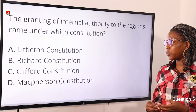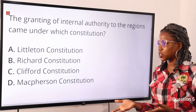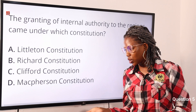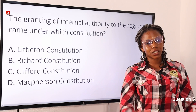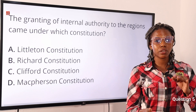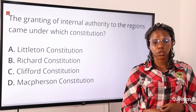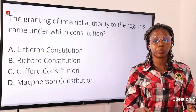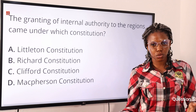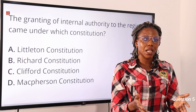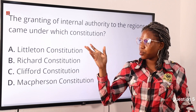Question five: the granting of internal authority to the regions came under which constitution? Option A: Lyttelton constitution, option B: Richards constitution, option C: Clifford constitution, option D: Macpherson constitution. The answer is the Richards Constitution of 1946, which introduced regionalism. Three regions were created — North, East, and West. Nigerians participated in the legislative council, and one Nigerian was a member of the executive council.